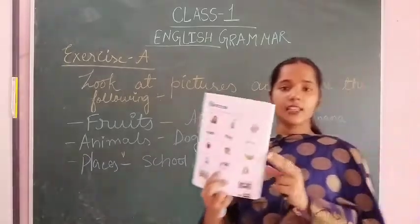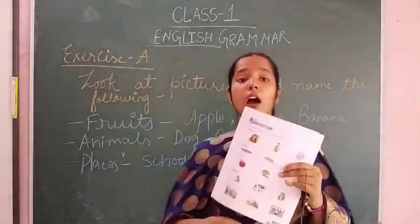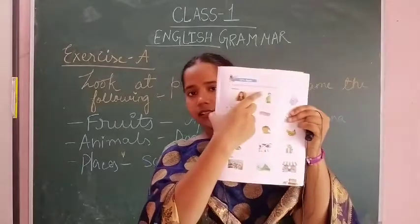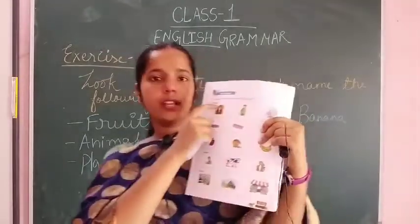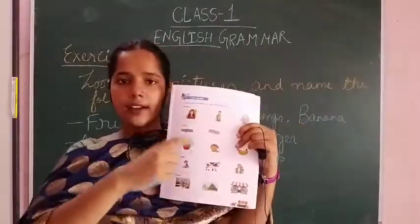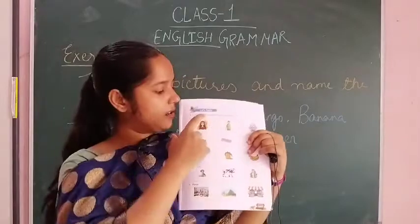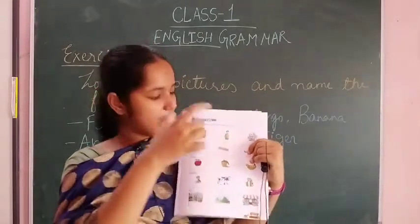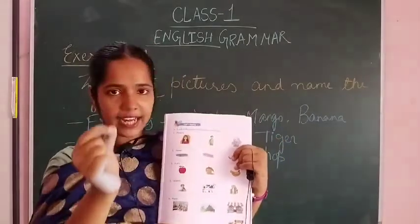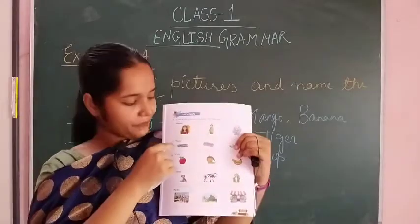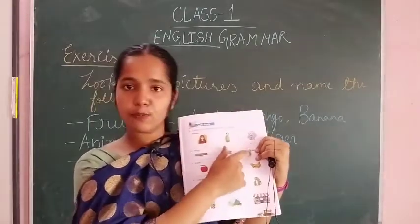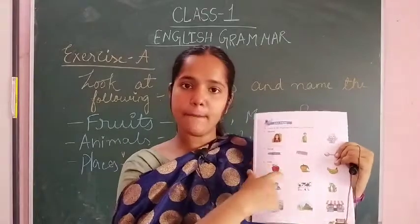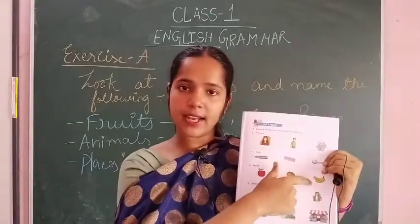This is the exercise you have to write in your copy. You will write the headings. Under the heading person, write: woman, man, child. After that, leave one line and write things: books, comb, spoon. After that, leave one line, then fruits: apple, and banana like that.